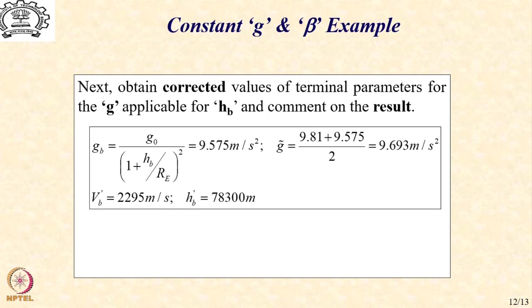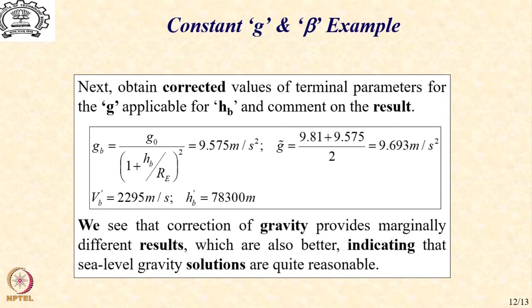Now, if you just check the percentages, you will find that this is a very small percentage change in the velocity as well as the altitude, which obviously means that based on even the average gravity, the change in the solution in comparison to the sea level value is only marginal. And that brings us to an important point that the sea level gravity solutions are quite reasonable.